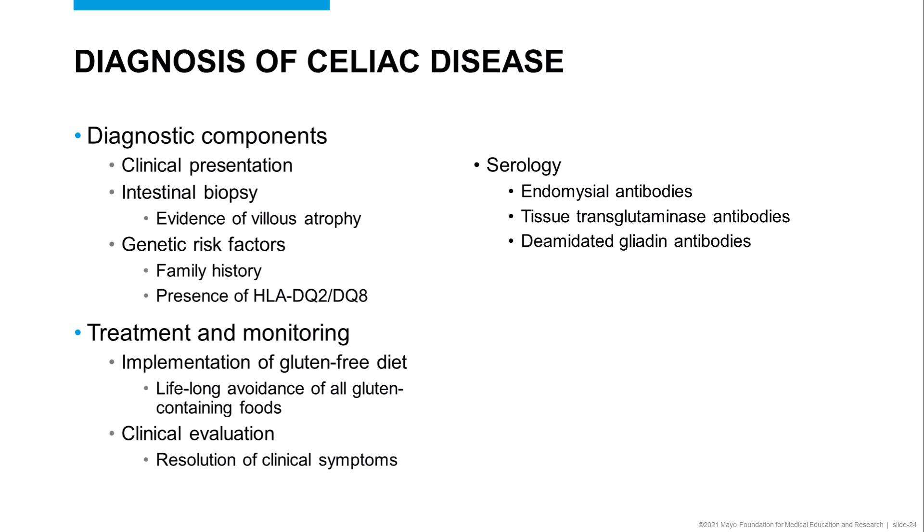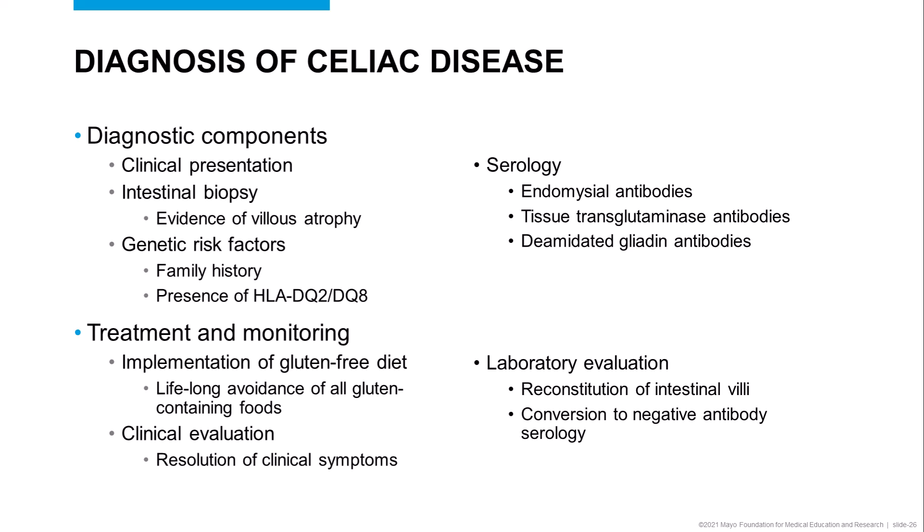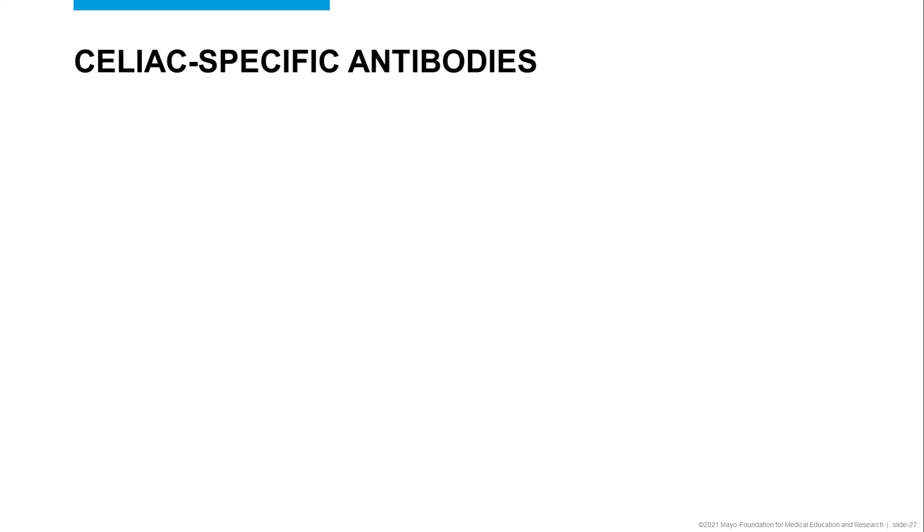With a successful gluten-free diet, the patient should begin to see resolution of their clinical symptoms, which is often accompanied by reconstitution of the intestinal villi and conversion to a negative antibody serology. As we saw on the previous slide, there are several classes of antibodies which are useful for the diagnosis of celiac disease.